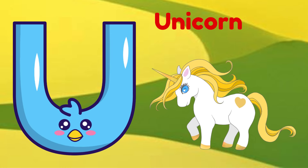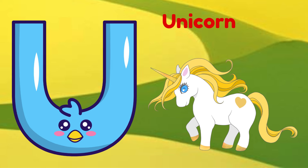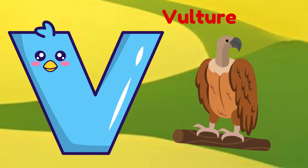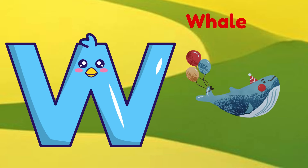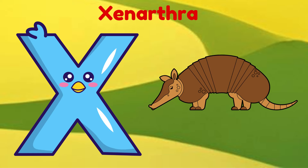U is for Unicorn. U, U, Unicorn. V is for Vulture. V, V, Vulture. W is for Wolf. W, W, Wolf. X is for Xenartha. X, X, Xenartha.